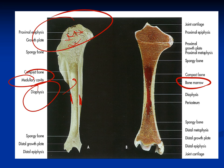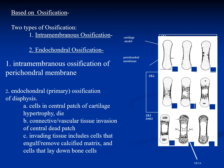Based on ossification, we have two types: intramembranous ossification and endochondral ossification. In endochondral ossification, we have a cartilage that is replaced by bone — 'chondral' means cartilage. In intramembranous ossification, mesenchymal cells differentiate into osteogenic cells and directly form bone — there is direct replacement of mesenchymal connective tissue into bone. Intramembranous ossification occurs in flat bones, whereas most long bones undergo endochondral ossification.